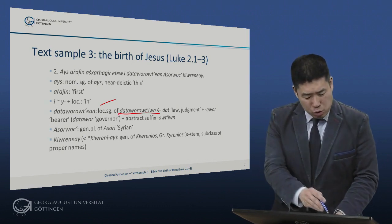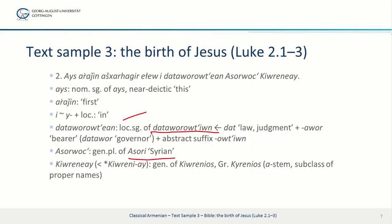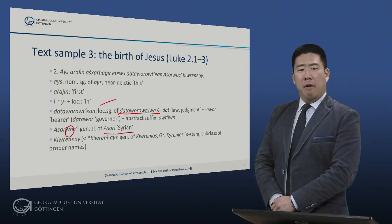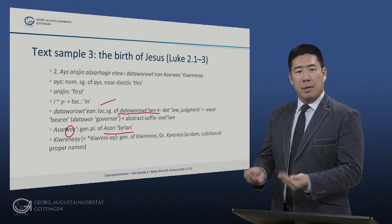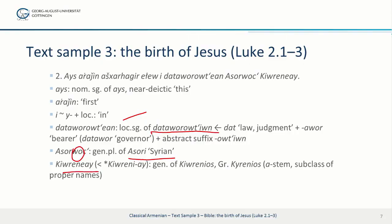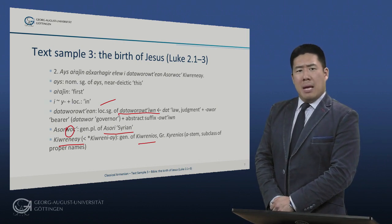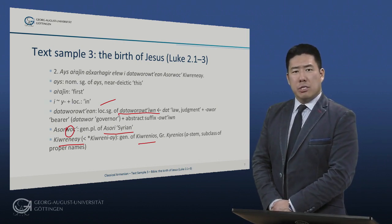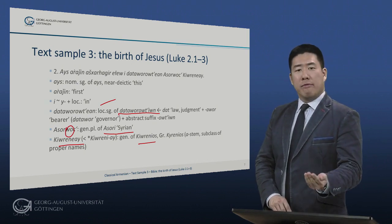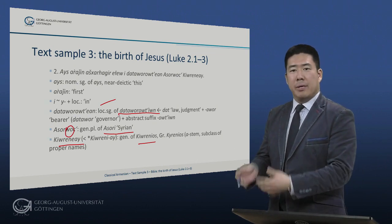In the governorship of Asorwots — genitive plural of Asori, meaning 'Syrian.' Note the regular alternation of e and w: y becomes w before o. So, 'in the governorship of the Syrians,' meaning he was governor of the Syrians. Kyurenii is the genitive of Kyurenios. This is a special subclass of o-stems consisting entirely of proper names, mostly borrowings from Syriac and especially Greek. Kyurenios is adapted from Greek Kyurenios, English Cyrenius. So this first census happened in Cyrenius' governorship of the Syrians — we would say 'of Syria,' as in the King James Bible.